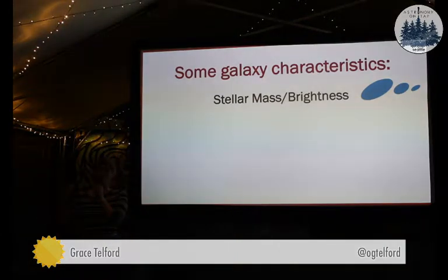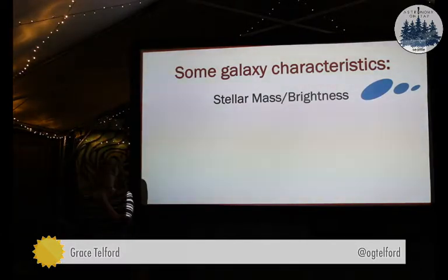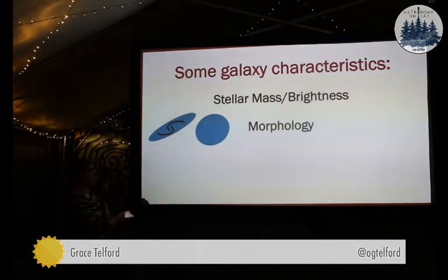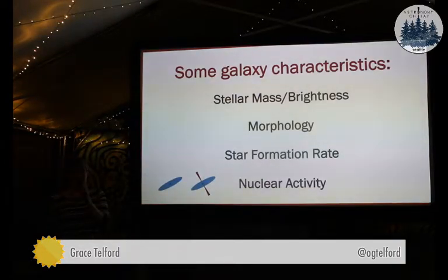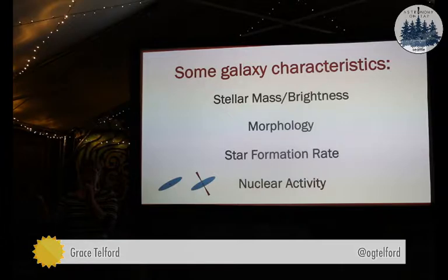I'm going to go through a bunch of different ways that we classify galaxies and a bunch of different categories that we put galaxies in, and I'm going to show you the span of galaxies across each of these categories. First off, we have stellar mass, or brightness of the galaxy — basically the more stars the galaxy has, the brighter it is. We have morphology, or the shape of galaxies — you see my very elegant spiral arms, or they can look pretty much just like blobs. We also have the star formation rate, how quickly galaxies are building up new stars. And we have nuclear activity: most galaxies host supermassive black holes at their centers. Sometimes these black holes eat a lot of gas really quickly, and then they blow out a whole bunch of energy — that's what these little jets are. That's nuclear activity.